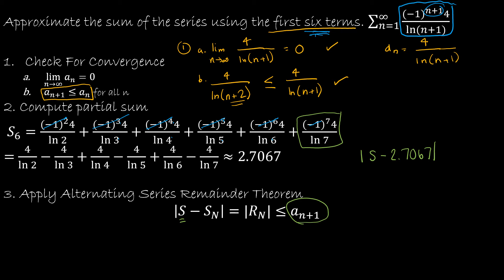So this was the sixth term. I'm talking about the seventh term, the first one that I did not use. So a sub seven is four over the natural log of seven plus one, which I can approximate with my calculator to be 1.9236. So that's what I have here, 1.9236.